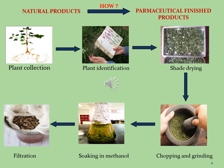The next step is plant identification. In this step, the plant is submitted to the botanist, which confirms its genus and species and allows us to proceed further. The next step is shade drying, where the whole plant material is placed in shade for drying, which may take some weeks or months. The next step is chopping and grinding, where the whole plant material is chopped and ground using a pestle and mortar or a crusher and grinder.